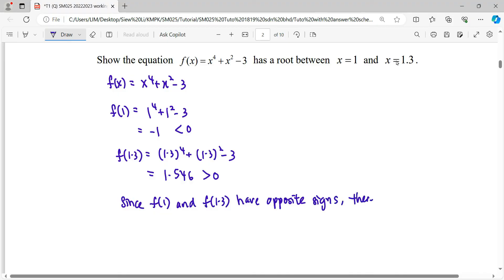therefore there exists at least one root. Following the question, there exists one root between x equals 1 and x equals 1.3.